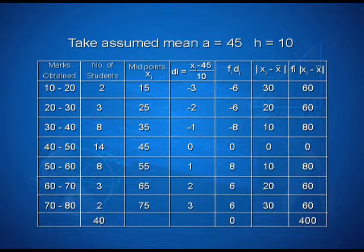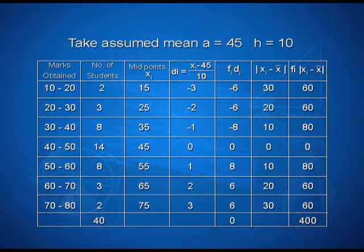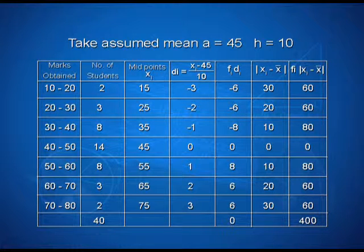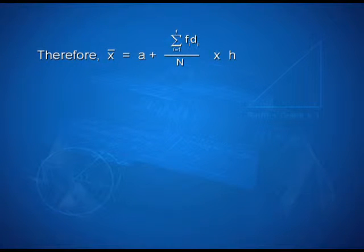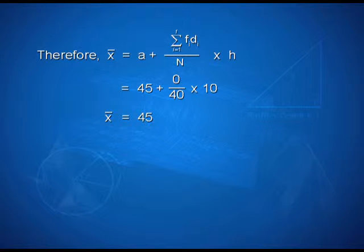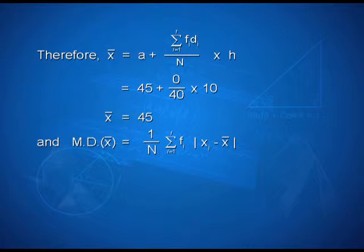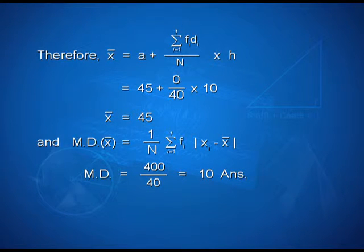Now we find the absolute value of |xi − x̄|: they are 30, 20, 10, 0, 10, 20, 30 respectively. The products fi×|xi − x̄| are: 2×30=60, 3×20=60, 8×10=80, and so on, giving a sum of 400. Therefore, x̄ = a + (Σfi×di / n)×h = 45 + (0/40)×10 = 45. Mean deviation = (1/n)×Σfi×|xi − x̄| = 400/40 = 10.